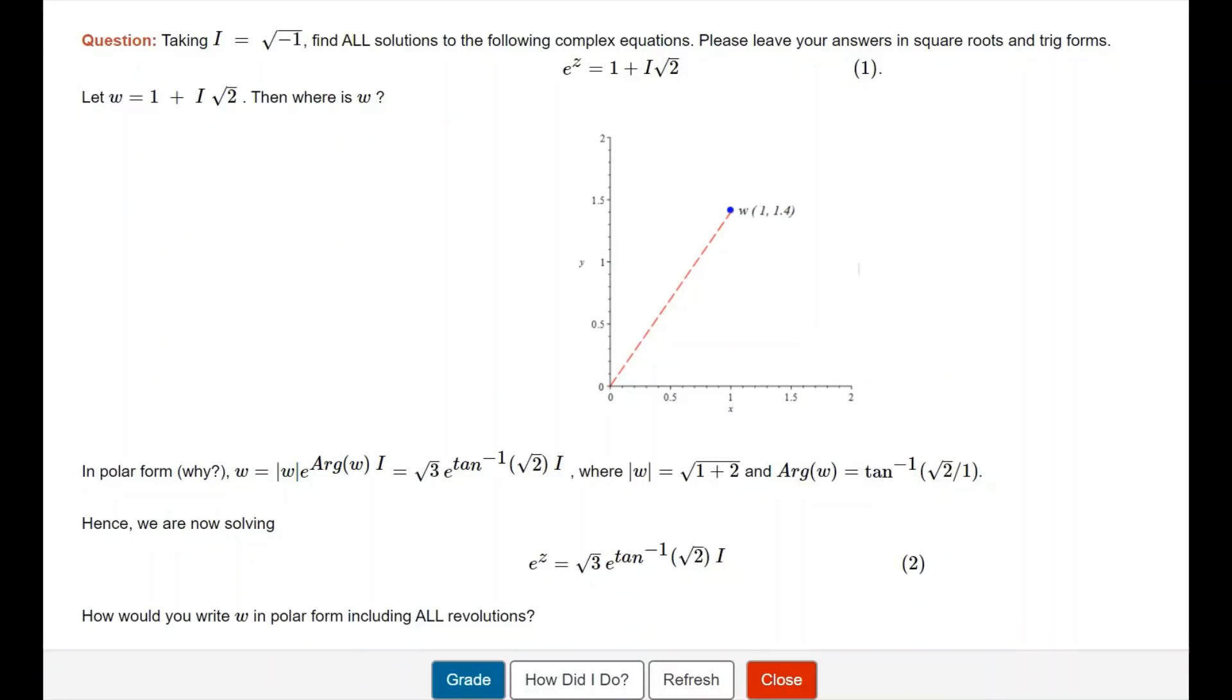Let's consider solving a complex equation given by equation 1, which is e^z = 1 + i√2. Here z is a complex number we don't know. And 1 + i√2, you can see, is another complex number which we name w.